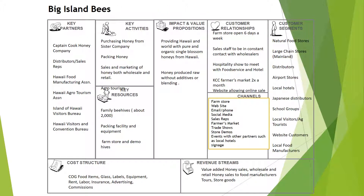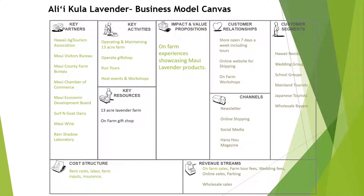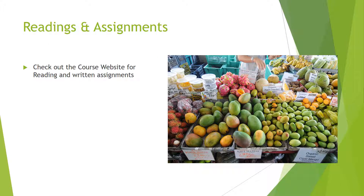There are a couple of other business model canvas examples for local ag businesses: Big Island Bees, located in Captain Cook on the Big Island, where they process honey, and Ali'i Kula Lavender, located upcountry Maui. You can check those out as additional examples. That wraps it up for this module — check out the course website for readings, assignments, links, and videos with more information on the business model canvas. You'll also have an assignment to create your own business model canvas. Thank you so much, see you next week — aloha!